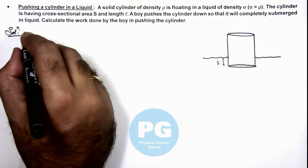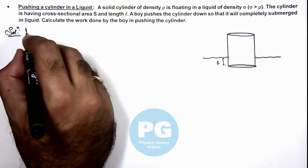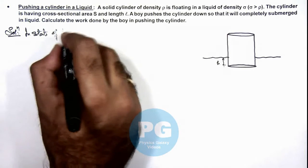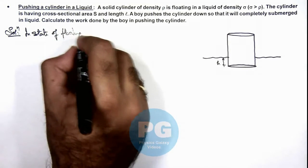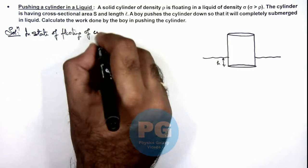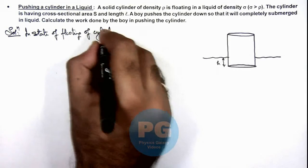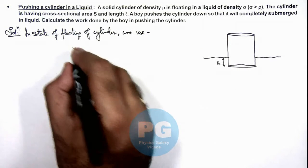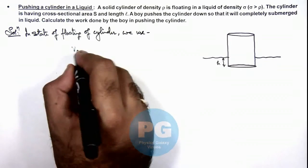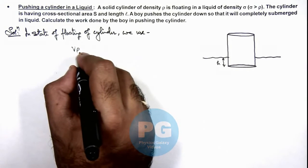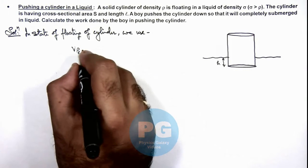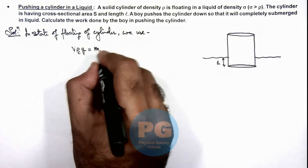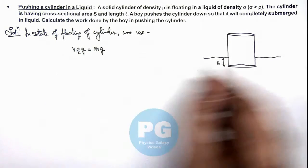Then here we can write, in state of floating of the cylinder, we use the buoyant force acting on the cylinder is V times ρ of liquid times g should be equal to m times g, where m is the mass of this cylinder.